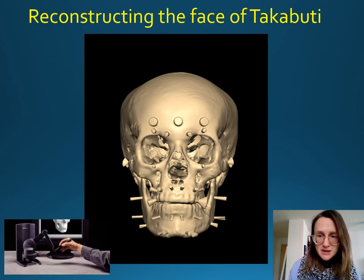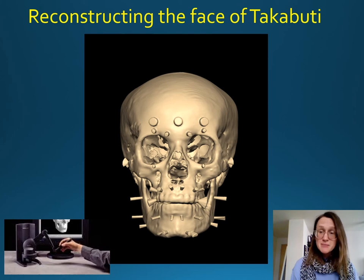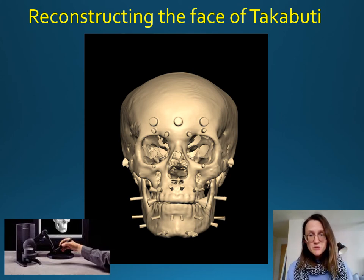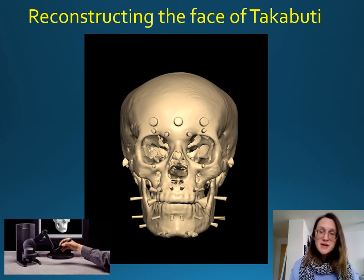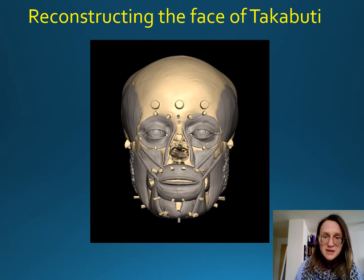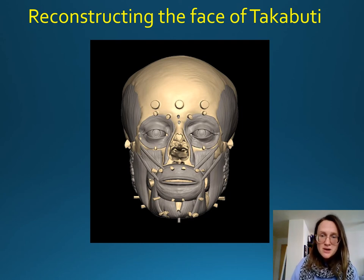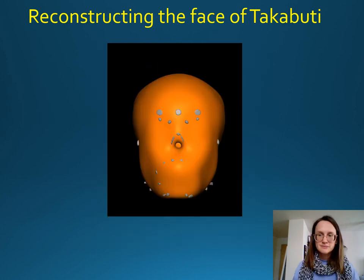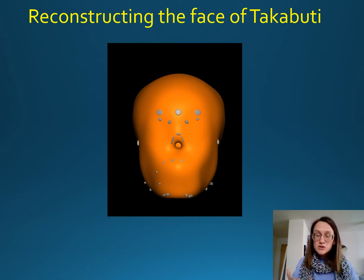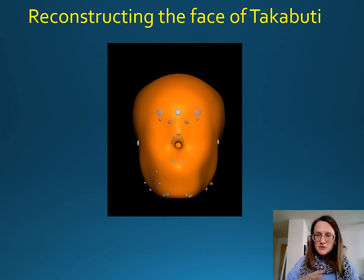Where a muscle attaches to the skull, it leaves a mark, and the stronger the mark, the more likely the muscle was more robust and perhaps larger — so we can use that information to help estimate thicknesses. Here we have all the muscles added to the skull of Takabuti, repositioned and resized according to the marks on the skull and the shape and size available to us. From that, we were able to combine all those elements to form the contour layer of the facial reconstruction — the external parts of the face are grown outwards and smoothed over to give the finished contour shape.